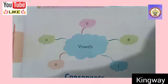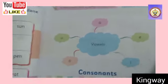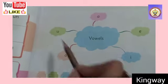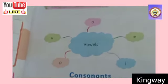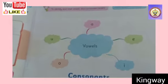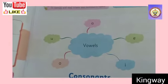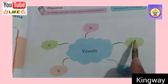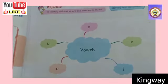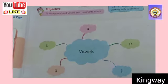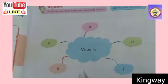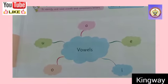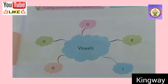Vowels — there are 5 vowels: A, E, I, O, U, which are written in the middle two lines. Their sounds are A, E, I, O, U. Okay students, these are the 5 vowels and you have to remember them well. Then you have to do it in the assignment sheet.